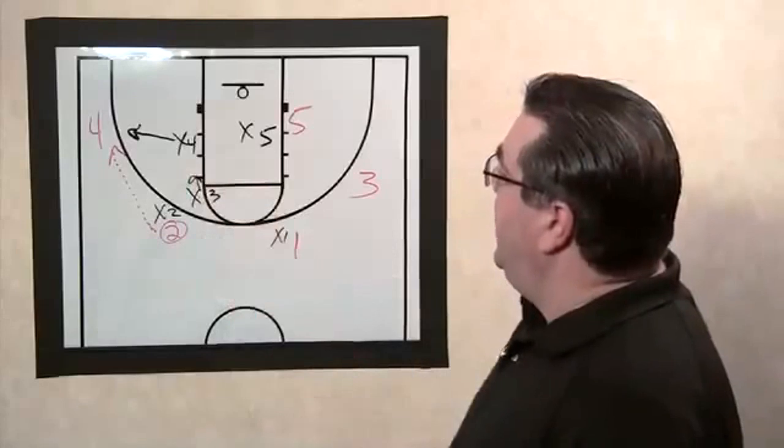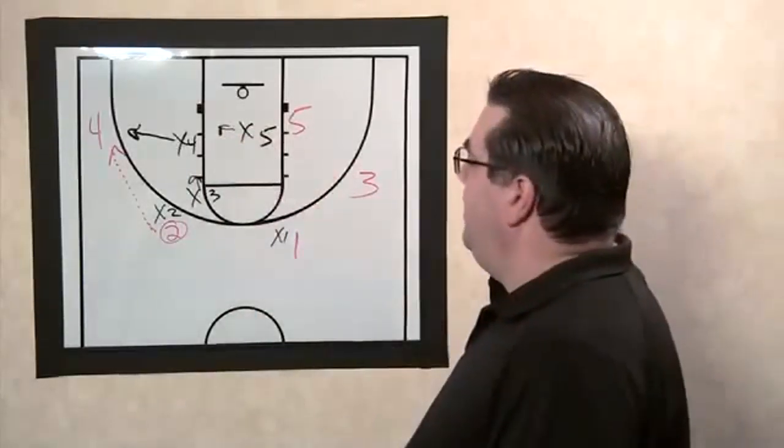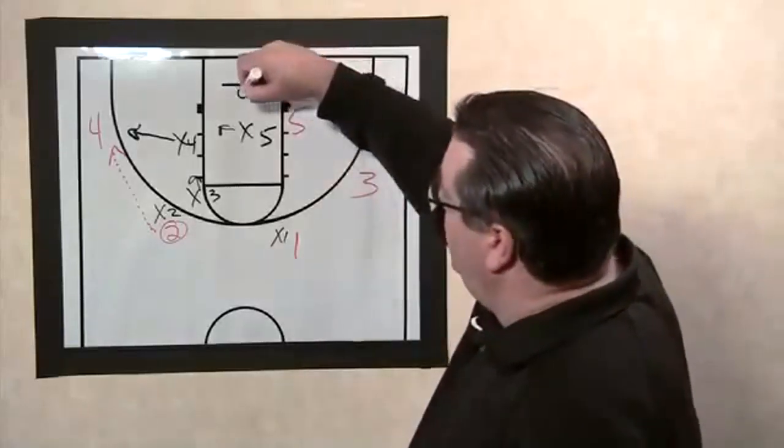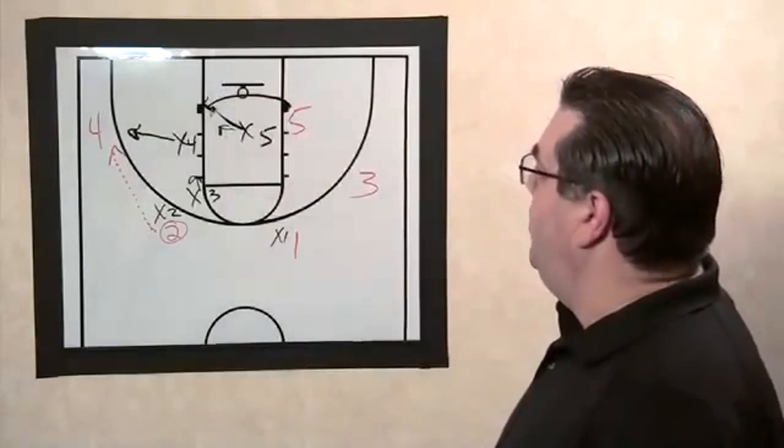X3 now is going to go and guard the high post. X5 is going to slide over in a help position knowing that they have to guard number five. If X5 were to cut across to the low post, it's X5's job now to guard that low post defender.